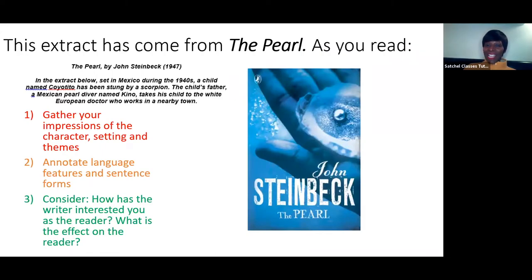Now let's look specifically at this extract from The Pearl. It gives us a short introduction: The Pearl is by John Steinbeck, written in 1947, so it's 20th century fiction. In the extract below, set in Mexico during the 1940s, a child named Coyotito has been stung by a scorpion. The child's father, a Mexican pearl diver named Kino, takes the child to the white European doctor who works in a nearby town. There's a lot of information to glean, and you can start thinking about how the writer will use language—verbs, similes, metaphors, pathetic fallacy, symbolism—and structure: narrative perspective, flashback, flash forward, foreshadowing, dialogue.